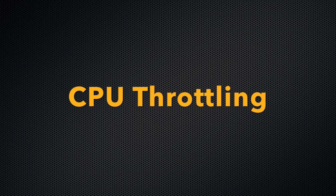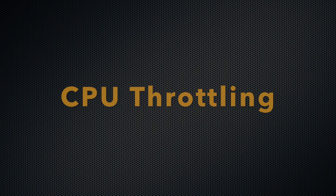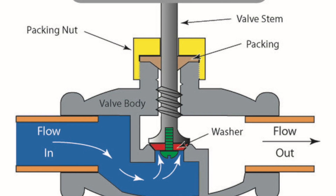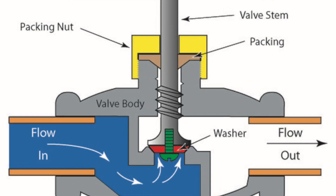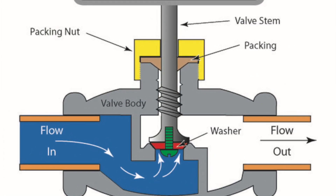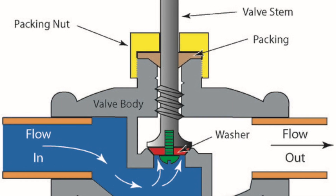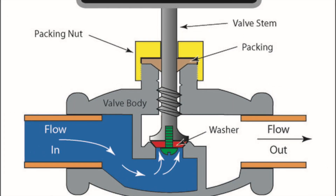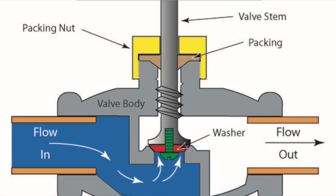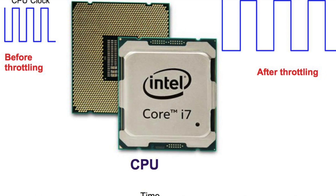So, what is CPU throttling? In the everyday sense, throttling is the process of regulating the flow of something such as gas or liquid in a system or an engine. In other words, throttling means intentionally slowing down or speeding up of some flow.